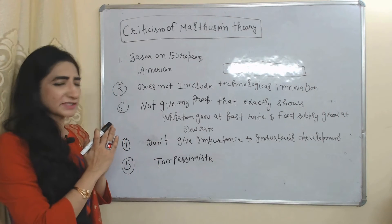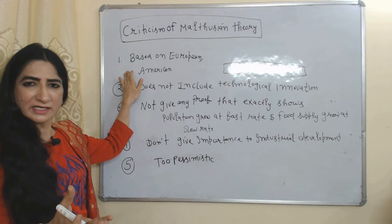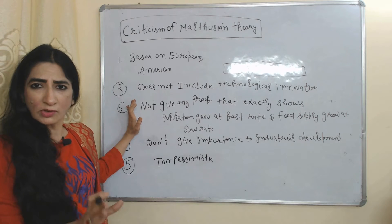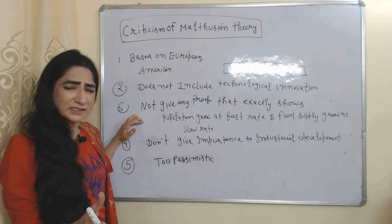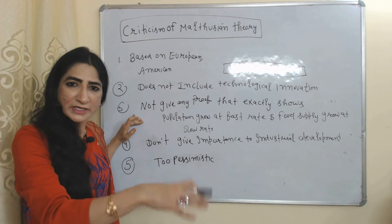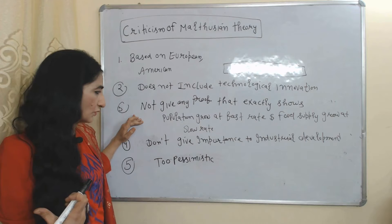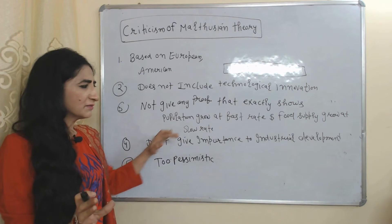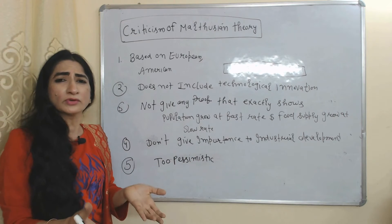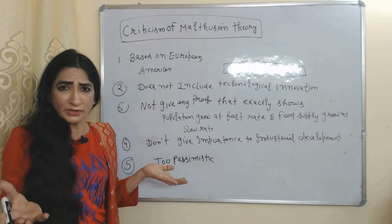Now we will see the criticism of this theory. This theory is based on European and American experiences that are not applicable everywhere. It does not include technological innovation, and doesn't provide proof that population is growing at a very fast rate while food supply is growing at a very slow rate. It does not give importance to industrial development, and it is very pessimistic because it does not talk about people's potential or their ability for economic growth.